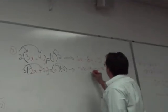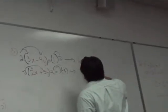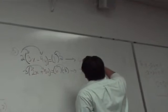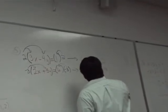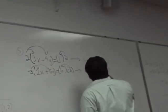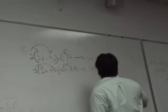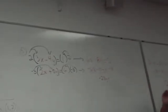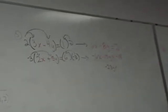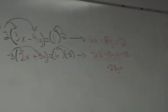All right, let's finish this now. We get negative 8y and negative 15y. Now, this is something that's going to happen when you're solving systems of equations. The first few examples we did had solutions that were whole numbers—integers.